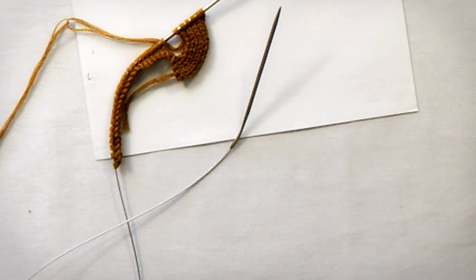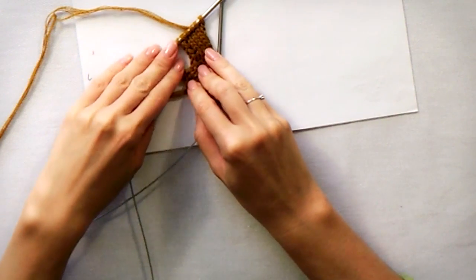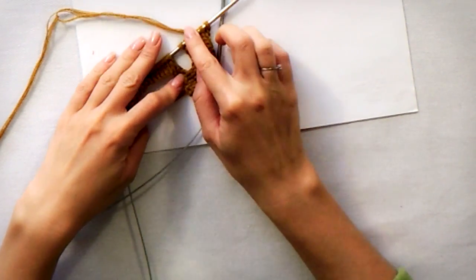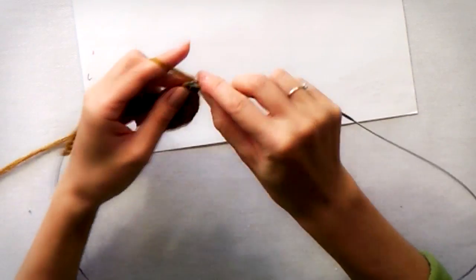Now the first segment is done. Let's go to the second one. Knit your 6 stitches and 3 additional from the left needle.